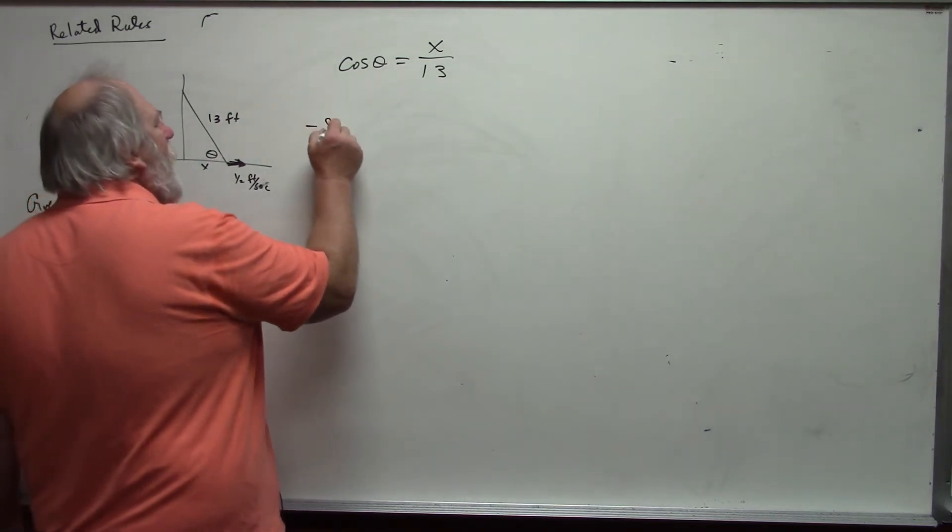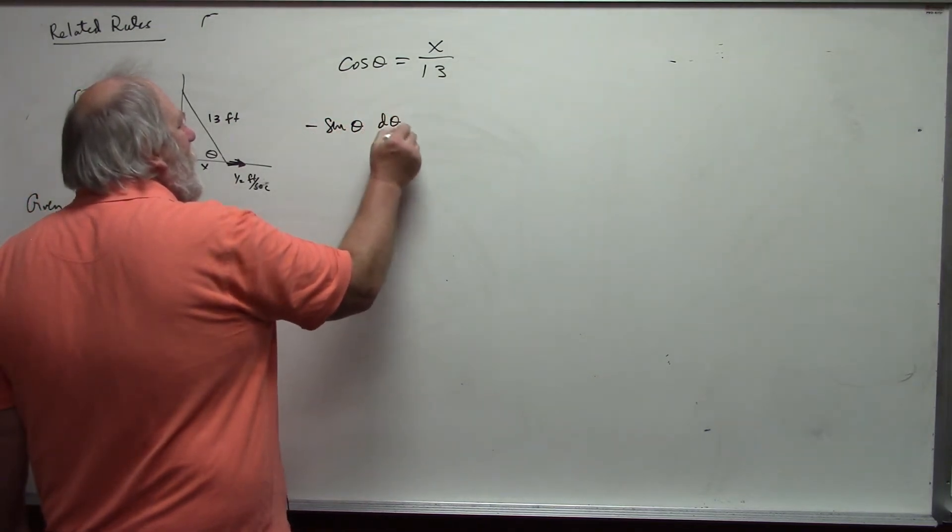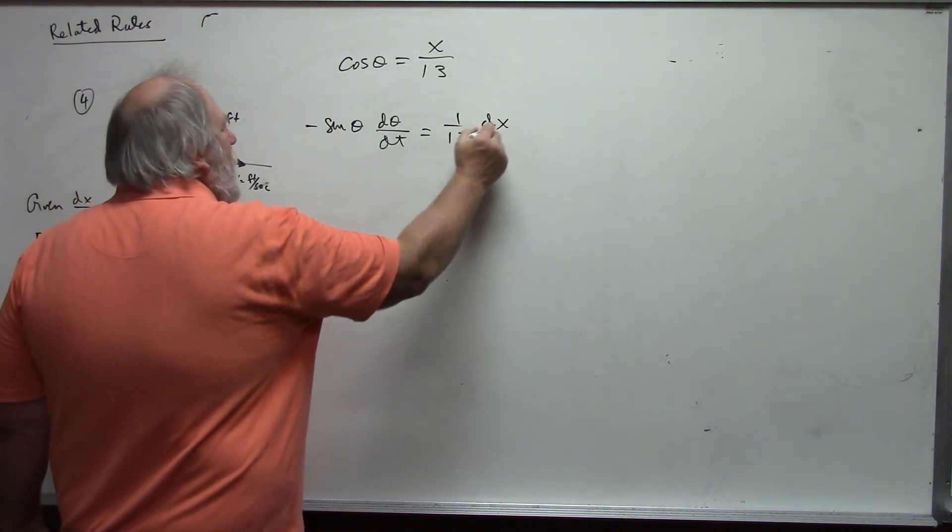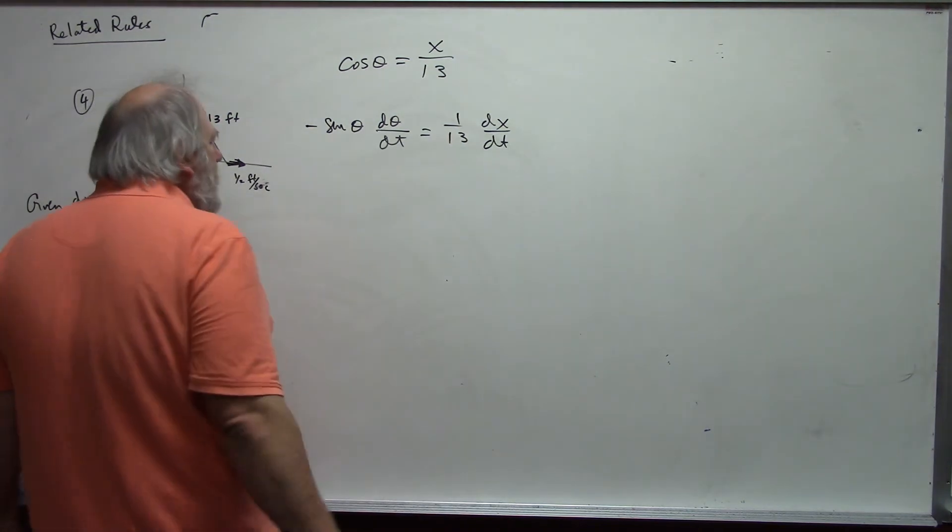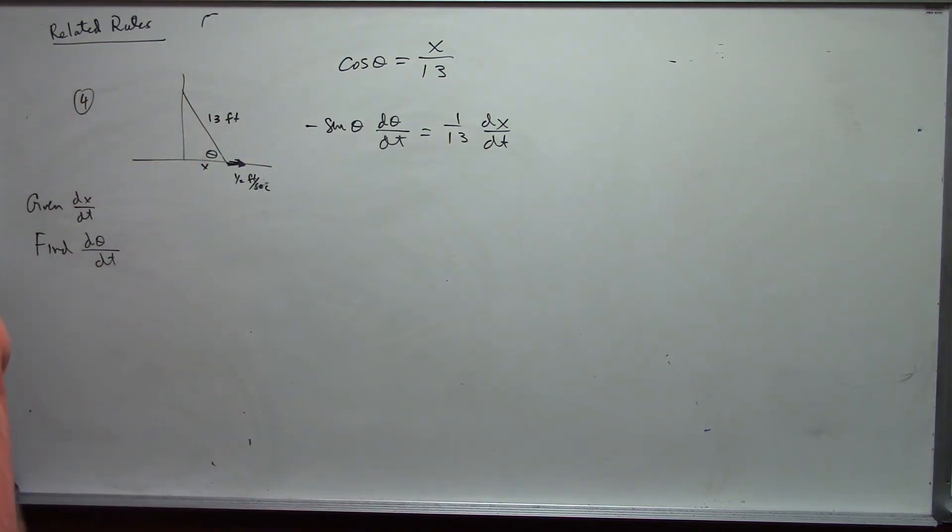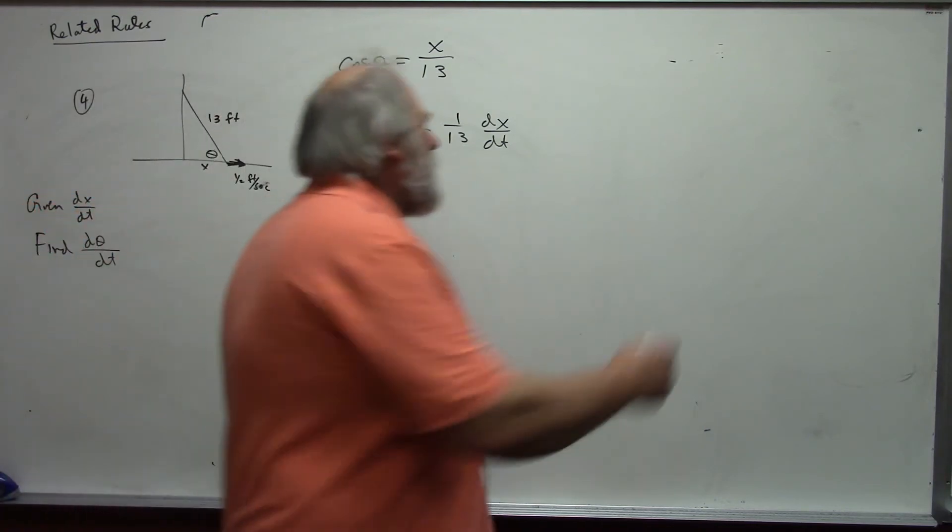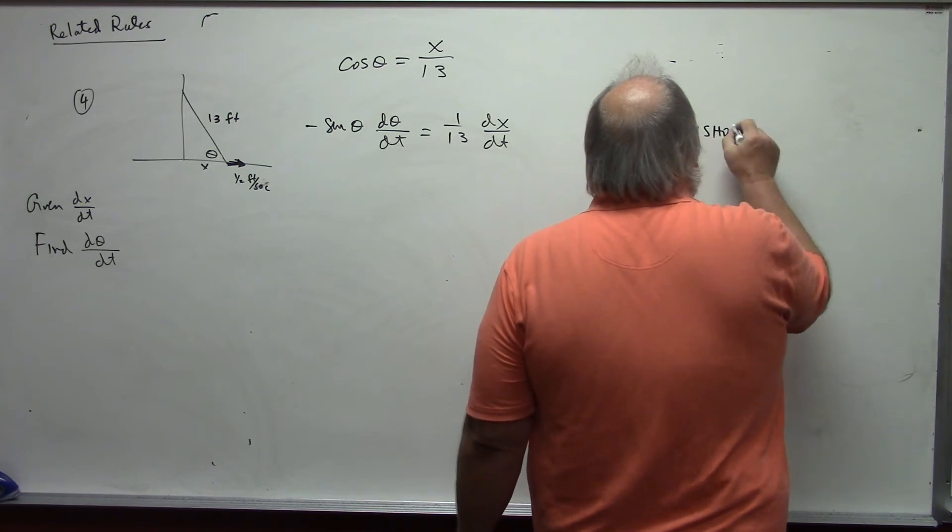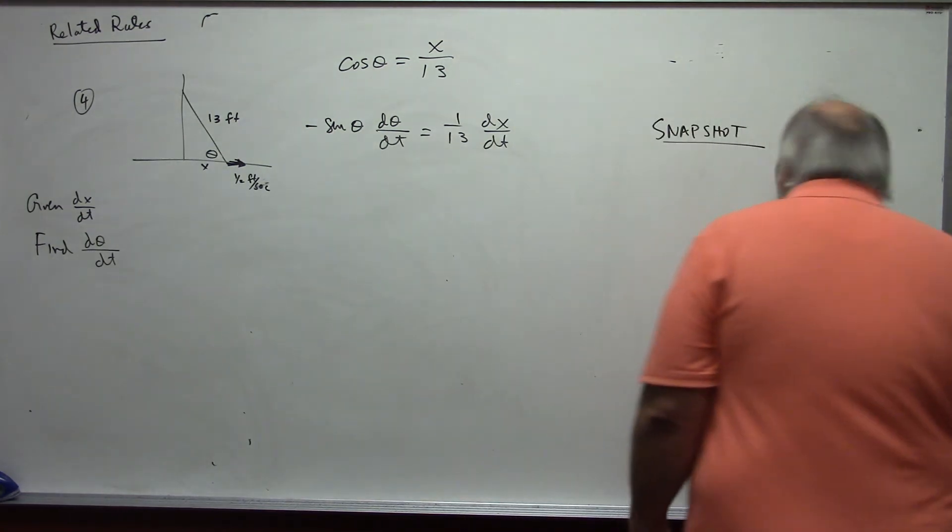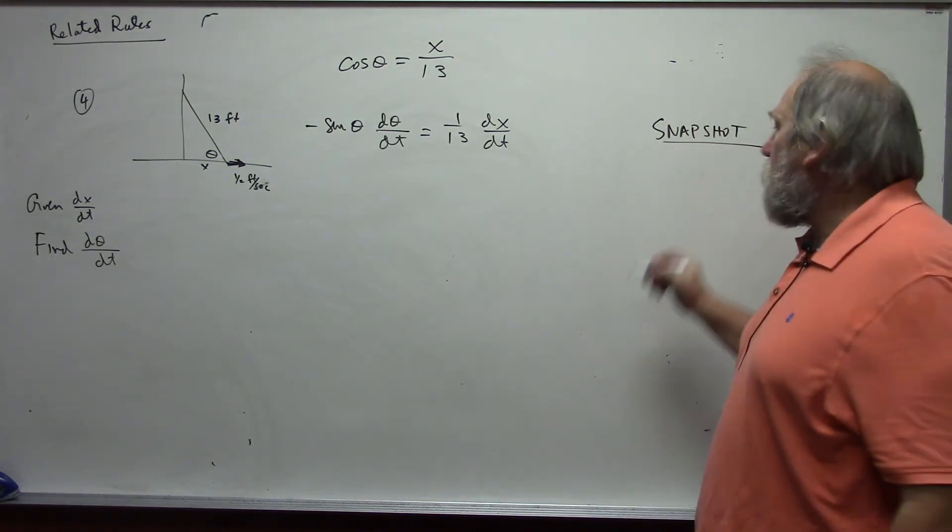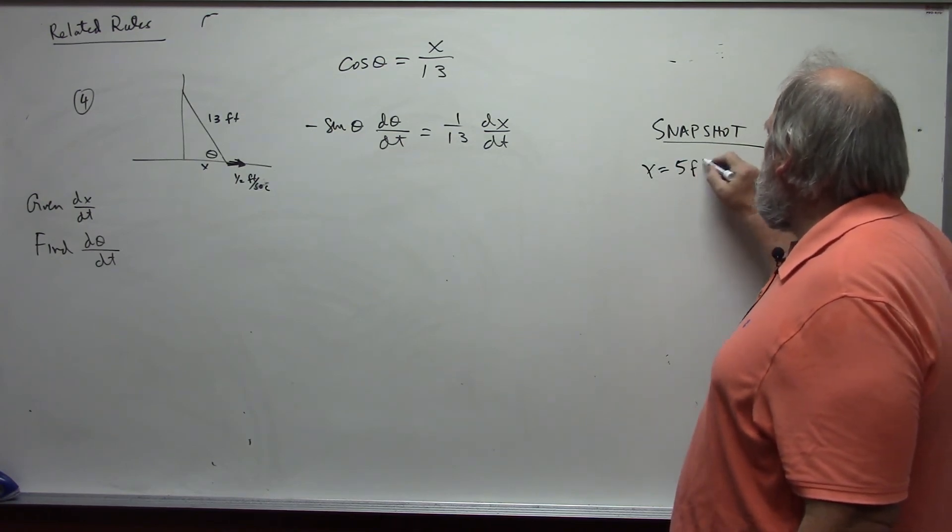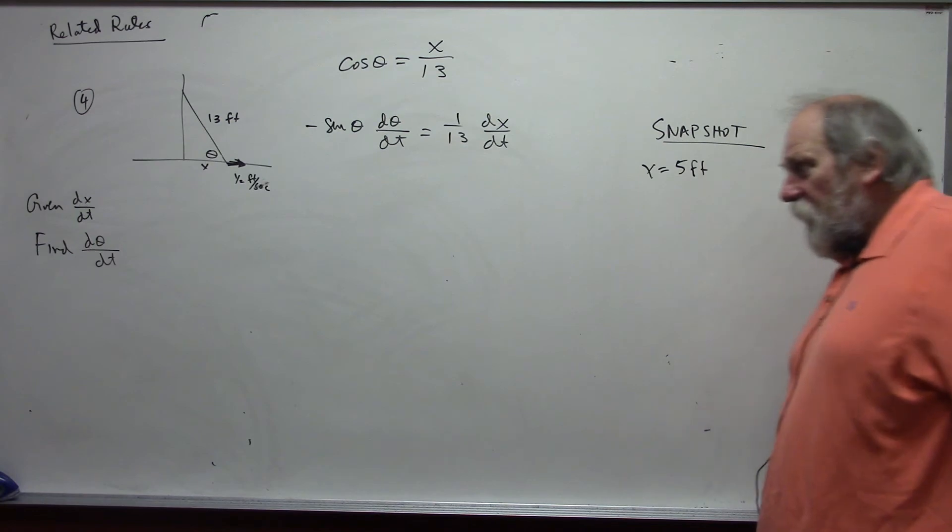The derivative, negative sine theta d theta/dt is equal to 1 thirteenth dx/dt. At this point, I use my snapshot value. My snapshot value, in this case, was when the base of the ladder is 5 feet. So, x is equal to 5 feet from the base of the wall.